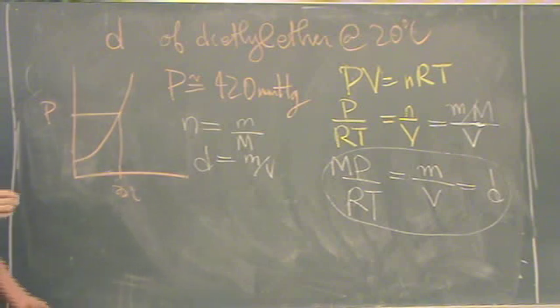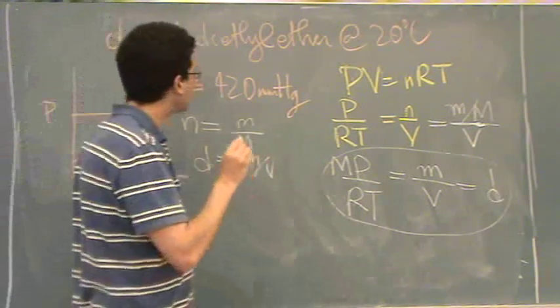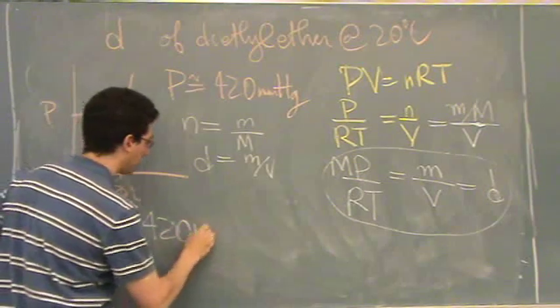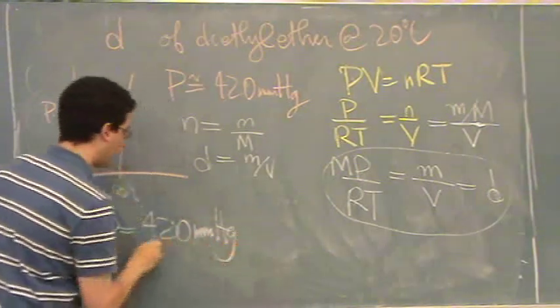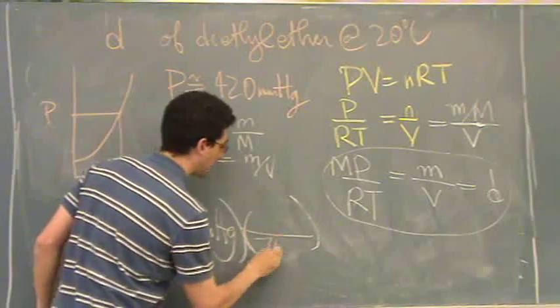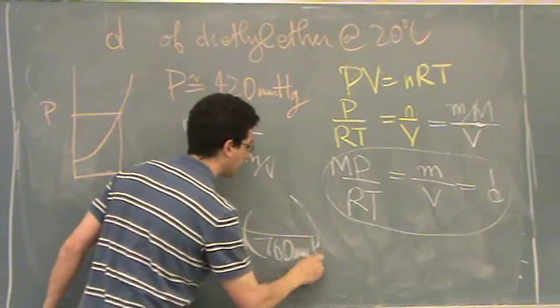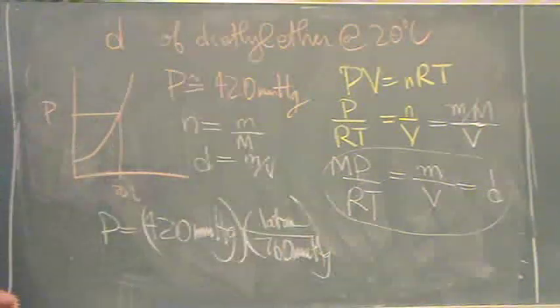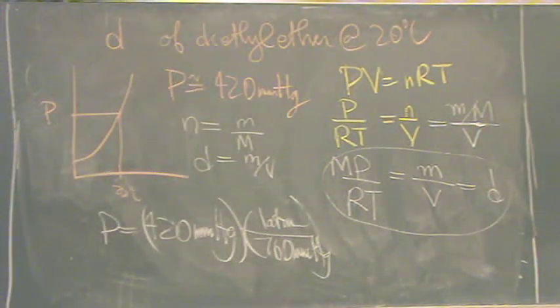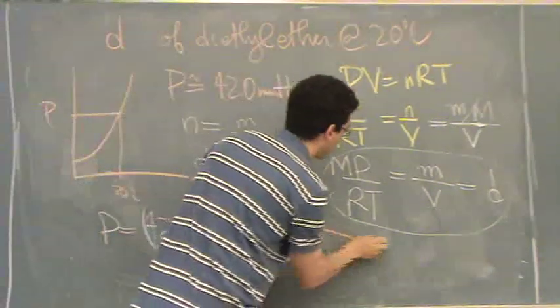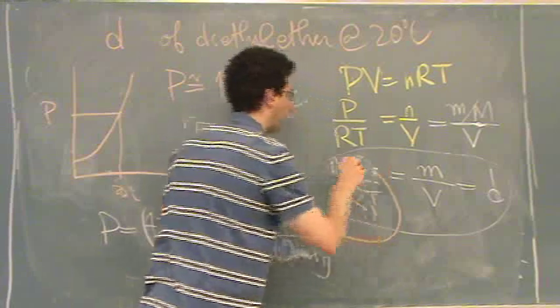Now, let's see what I have. Pressure at 420 millimeters mercury. I want to multiply that by 760 millimeters mercury in the denominator, one atmosphere in the numerator. Now, I've got pressure in atmospheres that I'm going to put right there.